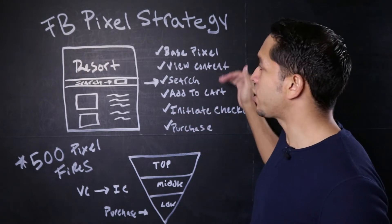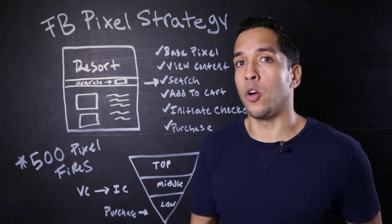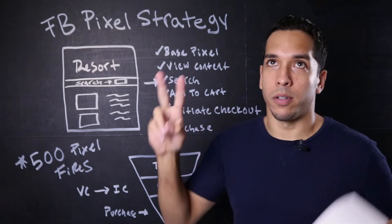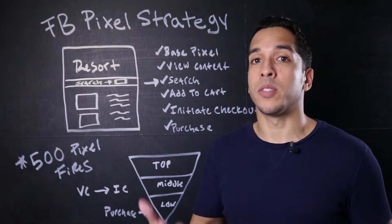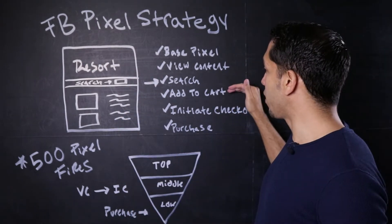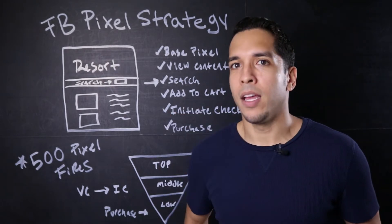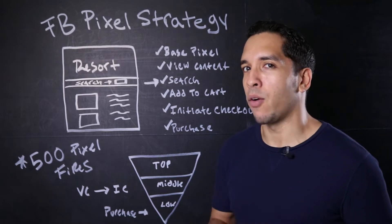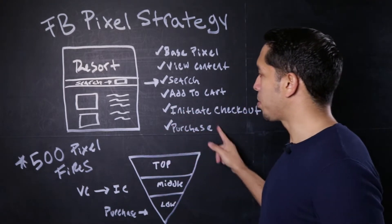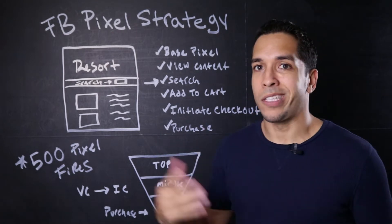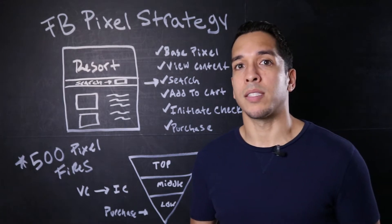So we were seeing each step of the funnel. Sometimes there are discounts on the homes, so people would have to add the booking to the cart in order to see the full price. When they got here, sometimes they would also go to initiate checkout right away because there were some additional terms and conditions. In this specific situation, what we were noticing is when we were optimizing the Facebook pixel for purchase — or in this case, an online booking where someone gave you a credit card — we weren't having a lot of success.